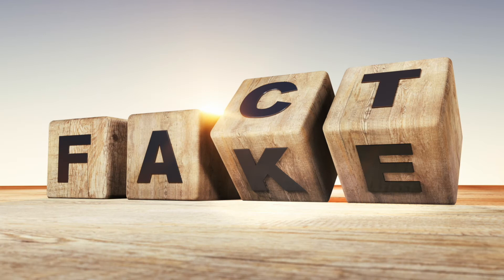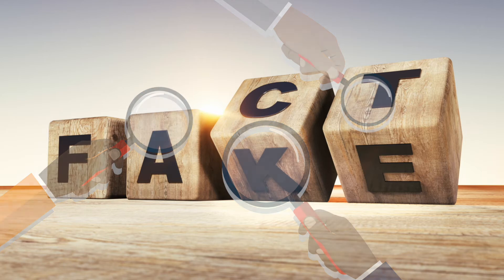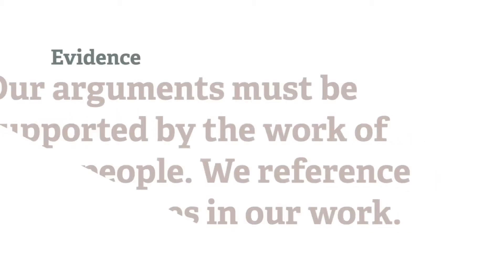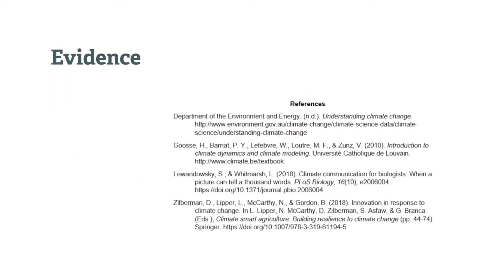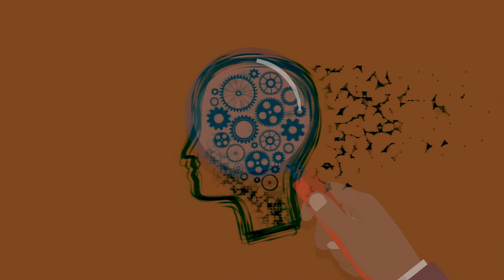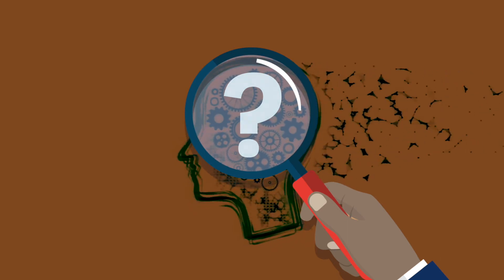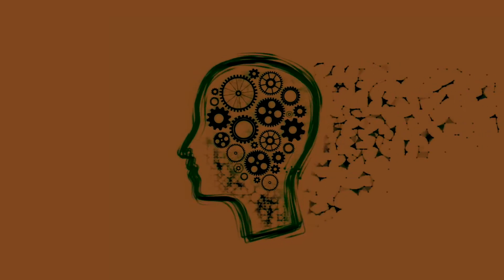So how can we be sure that our argument is factual and not merely an opinion? Firstly, our argument has to be supported by the work of other people. These are our sources of information, which we use to prove what we say. At university, we use referencing to show that we have used others' work. Sorting out what is going to be good information to use requires us to think critically. We have to evaluate the information and then make decisions about its value before we commit to using it in our work.